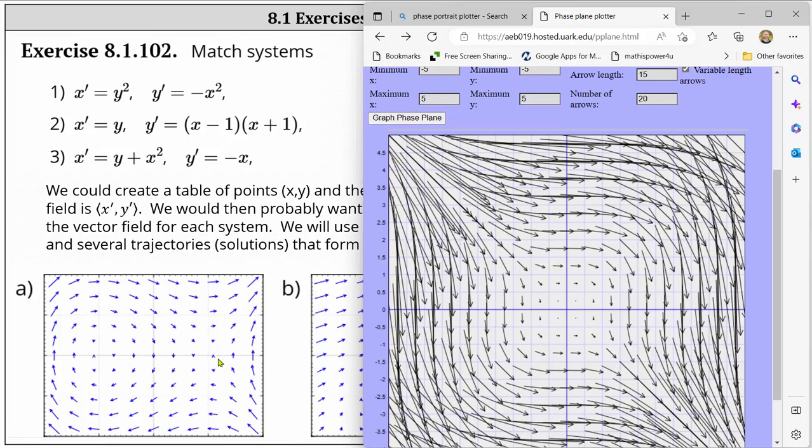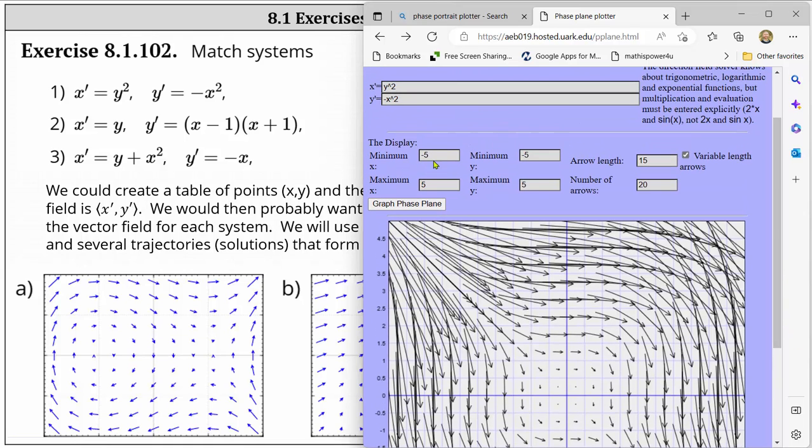First looking at the given slope fields I can see the x min and y min are negative two and the x max and y max are positive two. Let's go and change those settings. So the x min is negative two, the y min is negative two. We'll leave the arrows at 15 for now. X max positive two, Y max positive two. Graph.